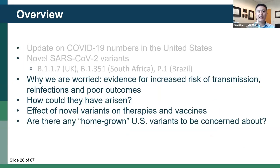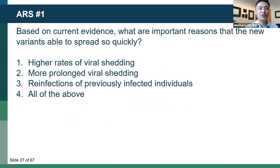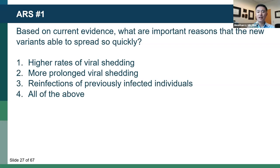We've talked a bit about COVID numbers and introduced these new variants. Now let's go through why we're worried — the evidence for increased risk of transmission, reinfections, outcomes, and where these variants could have come from. First, an audience response question: What do you think are the important reasons that the new variants spread so quickly? Is it because they result in higher rates of viral shedding? More prolonged viral shedding? Reinfections of previously infected individuals? Or all of the above? Please vote.